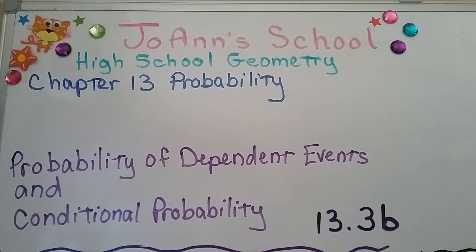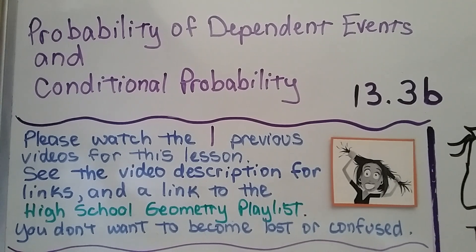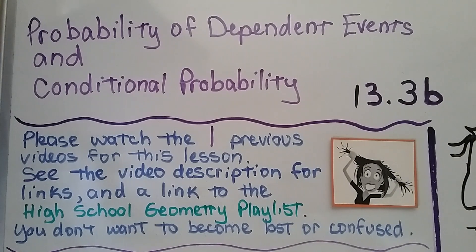Probability of Dependent Events and Conditional Probability. We're at 13.3b. We have one previous video for this lesson — it was 13.3a — and we talked about independent probability. You can check the description for that video and for a link to the high school geometry playlist if you need it.